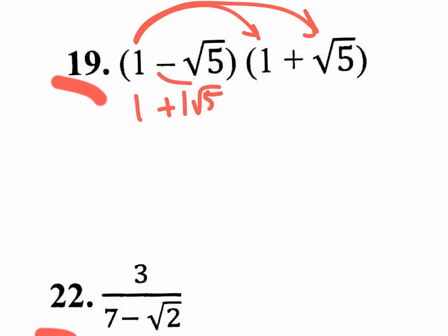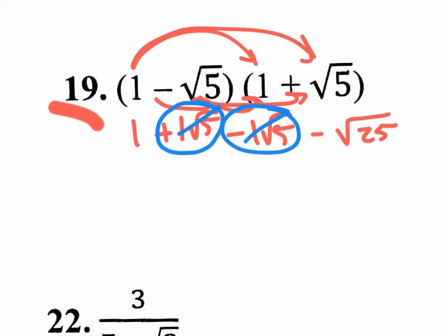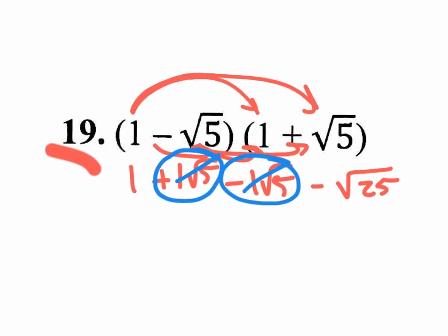When you take negative square root of 5 times 1, that's going to be negative 1 square root of 5. Now when you take negative square root of 5 times positive square root of 5, that's going to be negative. What is square root of 5 times square root of 5? That's the square root of 25, which gives us 5. Distributing the middle terms, you end up with one positive and one negative — and what happens with those middle terms? They cancel out.